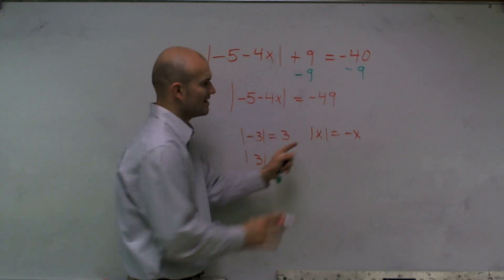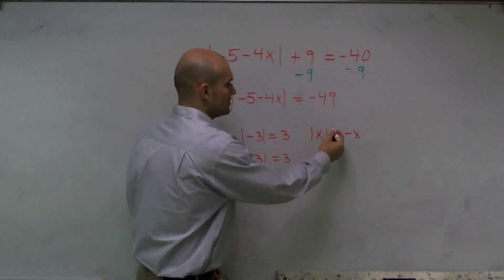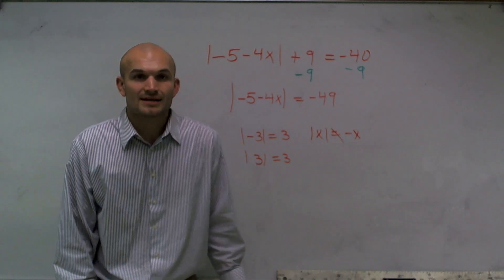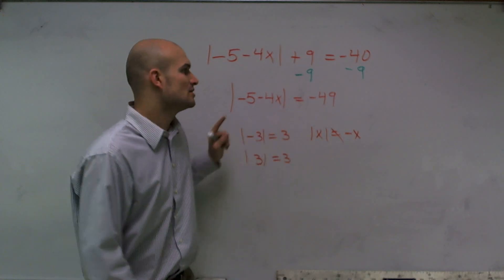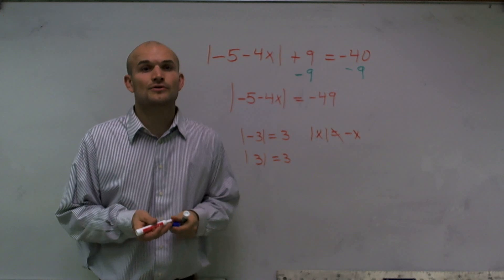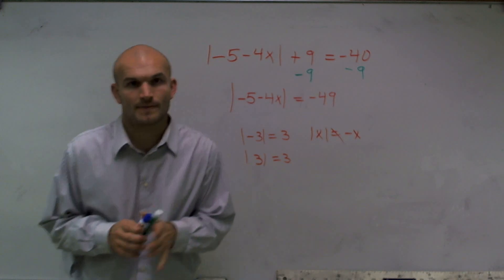Absolute value of x is never going to equal negative x. So you cannot have this equal to a negative number. So if you get this case, just make sure you know that there's not going to be a solution for the problem. All right, thank you.